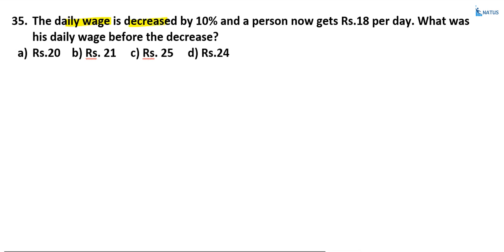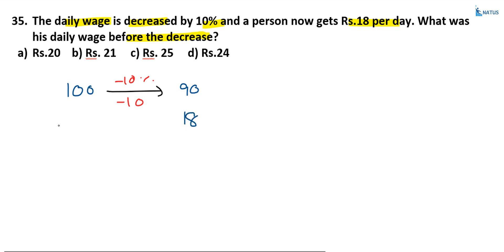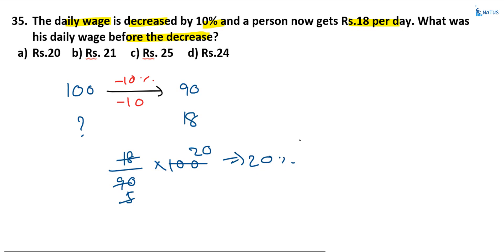The daily wage decreases by 10% and a person now gets 18 rupees per day. What was his daily wage before this decrease? Suppose before the decrease that is equal to 100. Decreasing by 10%, the value becomes 90. According to this condition a person now gets 18 rupees, so the amount before decrease is 18 by 90 into 100, which equals 20 rupees. Option A is the correct answer.